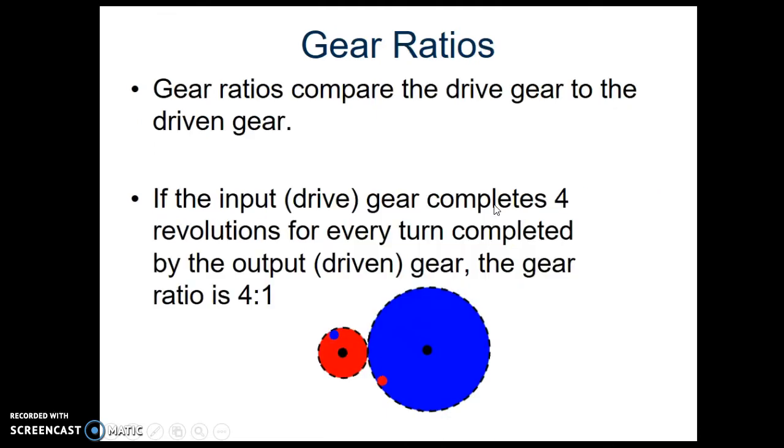How fast a gear may turn compared to a gear it's connected to is called a gear ratio. So if we want to calculate how much faster a gear will spin at the end compared to the beginning, we could do that in a number of ways.